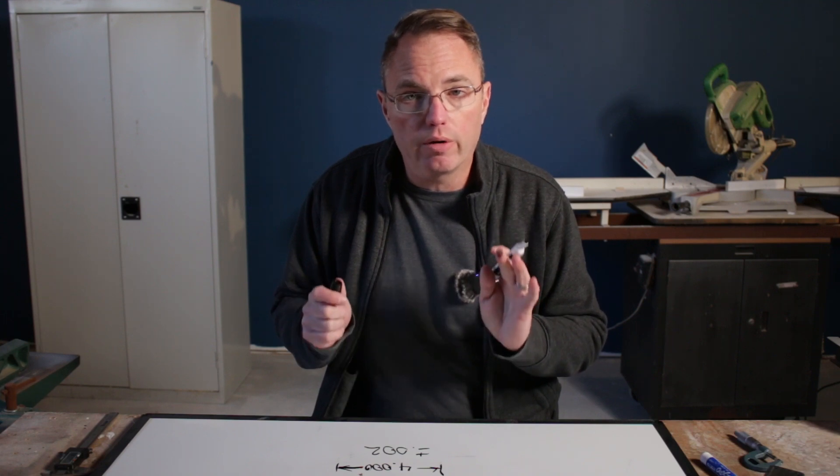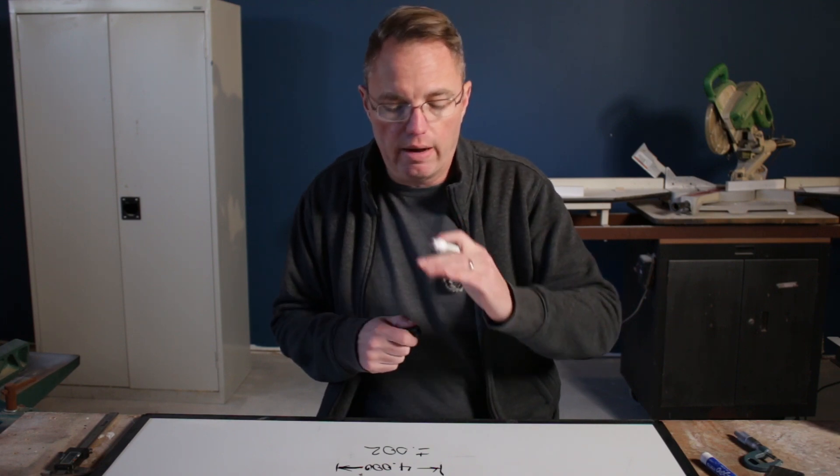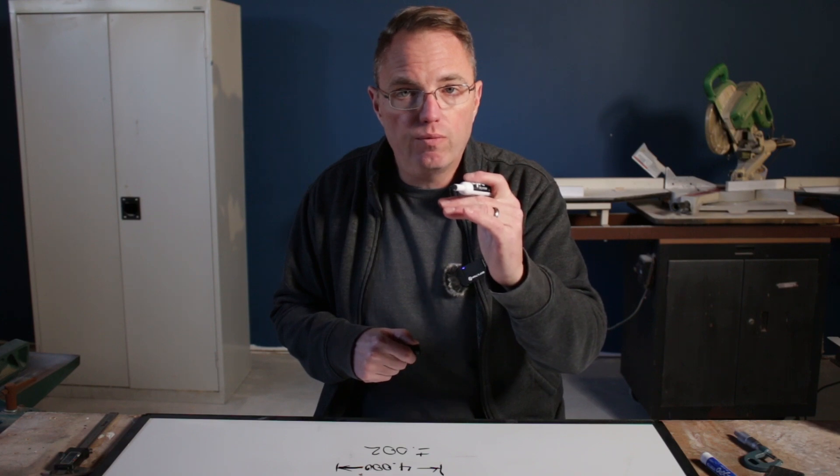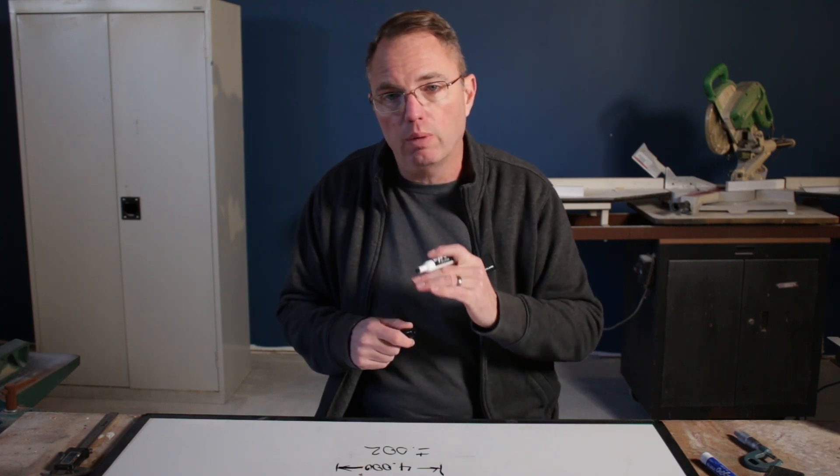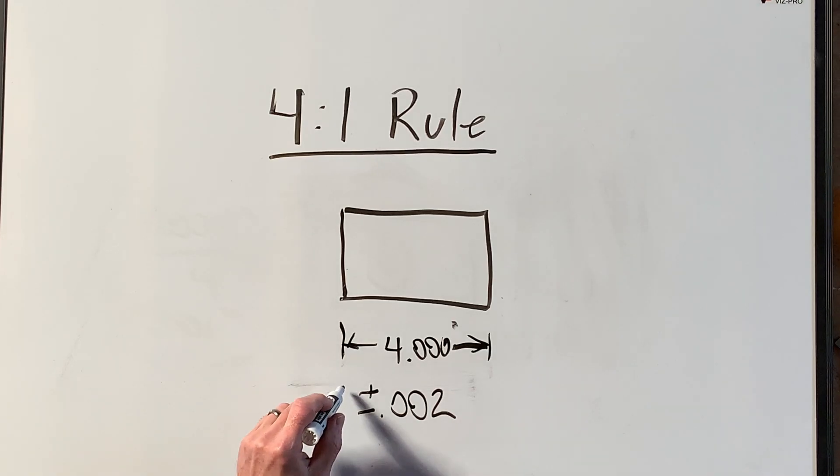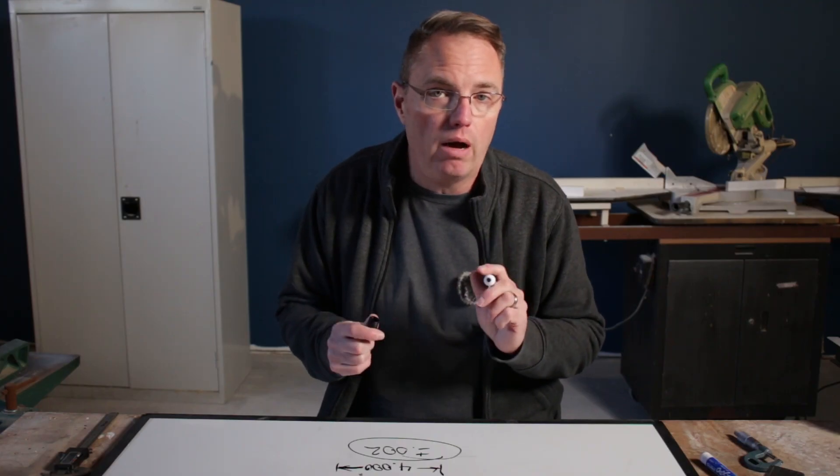That plus or minus two thousandths is the part tolerance. You're allowed to go two thousandths above four inches and two thousandths below. So we will need to know that part tolerance in order to calculate the precision of the instrument that we need to use.